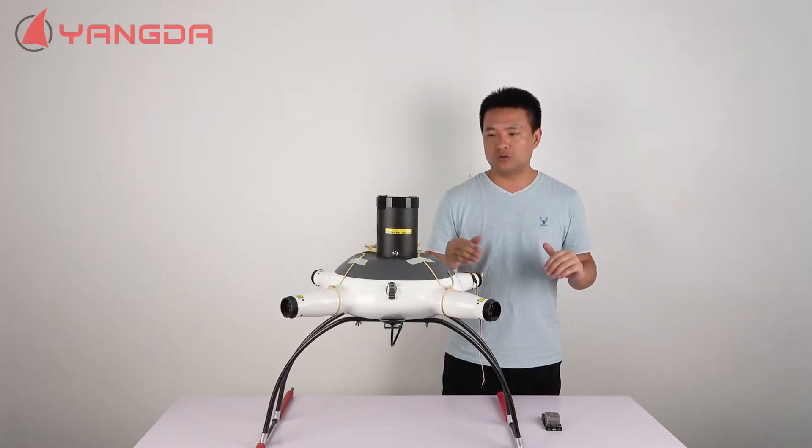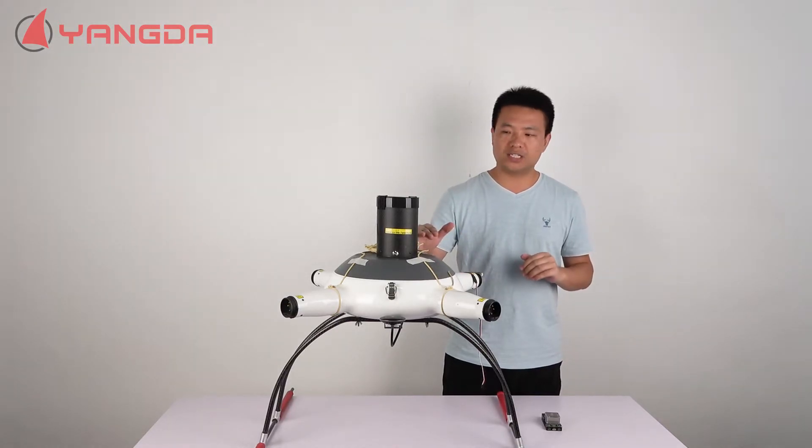For the DJI flight controller, you don't have to connect the parachute with the flight controller, because the Saver parachute has a built-in sensor and electric core to detect the altitude of the drone.